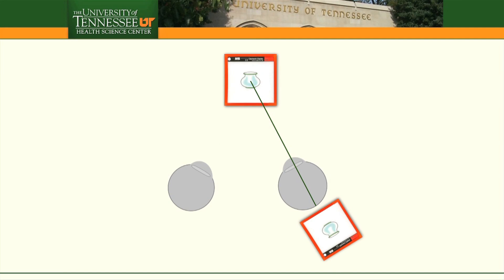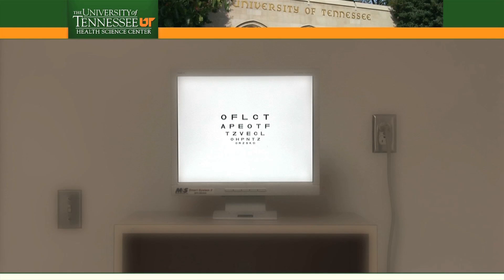In the presence of no deviation, the two retinal images from the troposcope are subjectively projected in cortical alignment. This is what they would see in free space. Vision is harmonious. There is no diplopia.